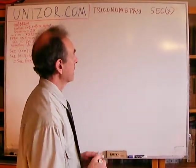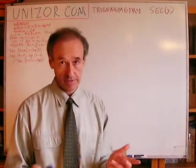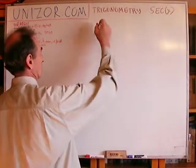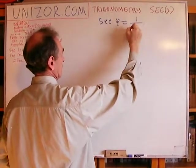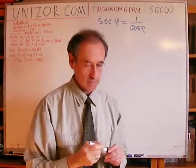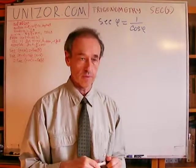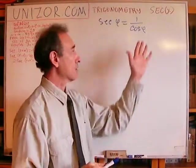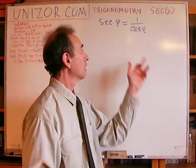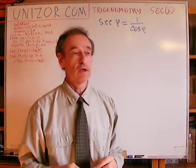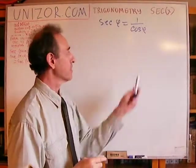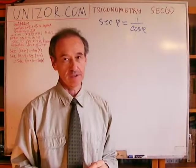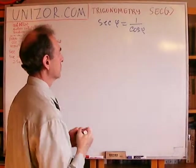Well, secant is, by definition, 1 over cosine phi of the angle, for any angle. Since cosine is defined for any angle, this is also defined for almost any angle, obviously for those angles where cosine is not equal to zero.